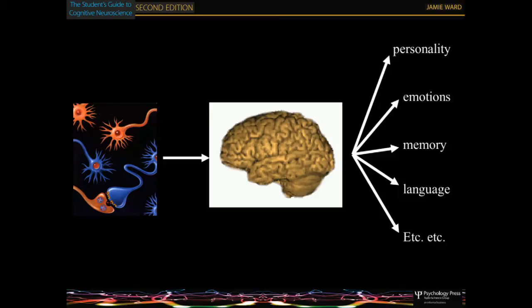How are these linked? You've got neurons which we understand in detail — how synapses work, how connections between neurons are formed. We've got the structure of the brain. Yet we've got all these different cognitive functions: personality, emotions, memory, language. But when you come down to the level of neurons, that's all they are. Memory is the firing of neurons. Language is the firing of neurons. There's no different neurotransmitter for memory than for language. So how do you get this multiplicity of functions coming out of a very simple neural system?